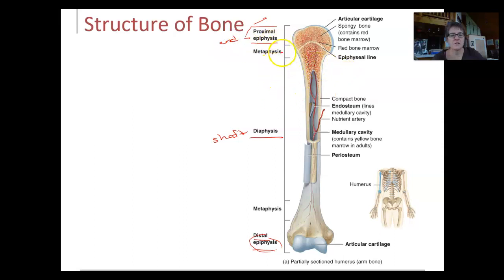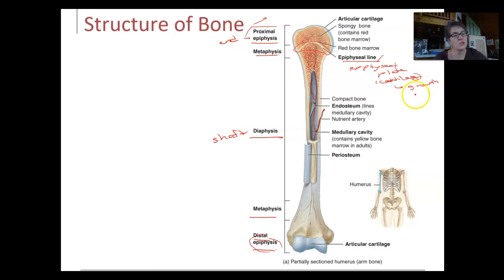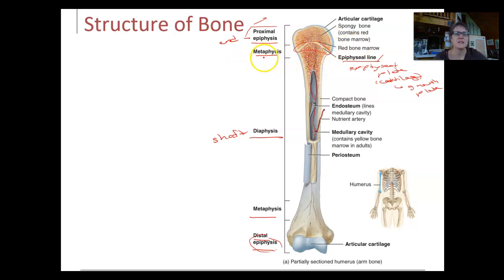In between the epiphysis and the diaphysis is the metaphysis, on both sides. The metaphysis includes a line — the epiphyseal line. If you're older, it's called the epiphyseal line; if you're young and still growing, it's known as the epiphyseal plate. An epiphyseal line is solid bone; an epiphyseal plate contains cartilage — because that's your growth plate. You can only grow if cartilage is present. Once the cartilage is gone, you're done growing. When growth plates seal too quickly, it means there's no more cartilage, and that growth plate is located in the metaphysis.